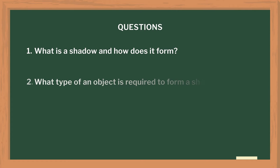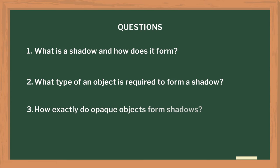I held an opaque object in front of the light and prompted the students to answer the following questions: What is a shadow? How does it form? Which type of object is required to form a shadow? How do opaque objects form shadows?